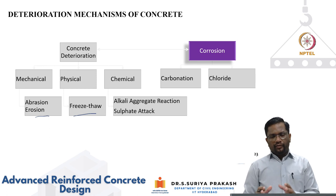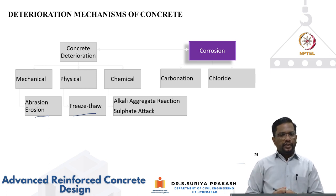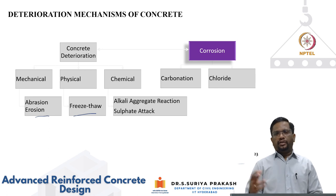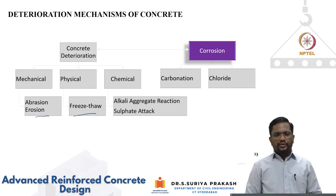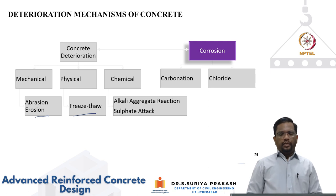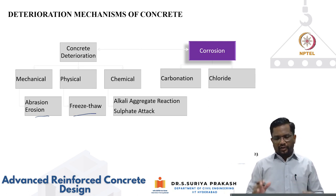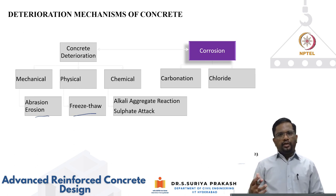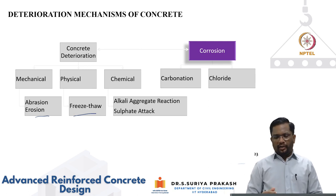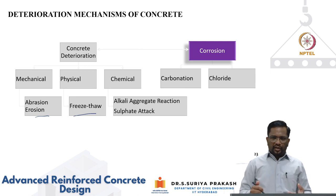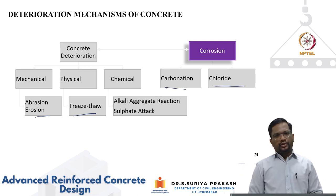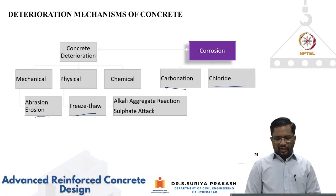With that, the concrete deterioration mechanisms — mechanical, physical, and chemical — have been covered. The first part discussed alkali aggregate reaction and sulfate attack; this part covered freeze-thaw, abrasion, and erosion. Now we turn to steel. Concrete is weak in tension, so steel is provided wherever tensile stresses develop. Steel and concrete have a good chemistry — their coefficients of thermal expansion are nearly the same, so residual stresses are minimal, and steel provides excellent ductility. However, corrosion acts like a concrete cancer, and enormous money is spent repairing corrosion-related damage.